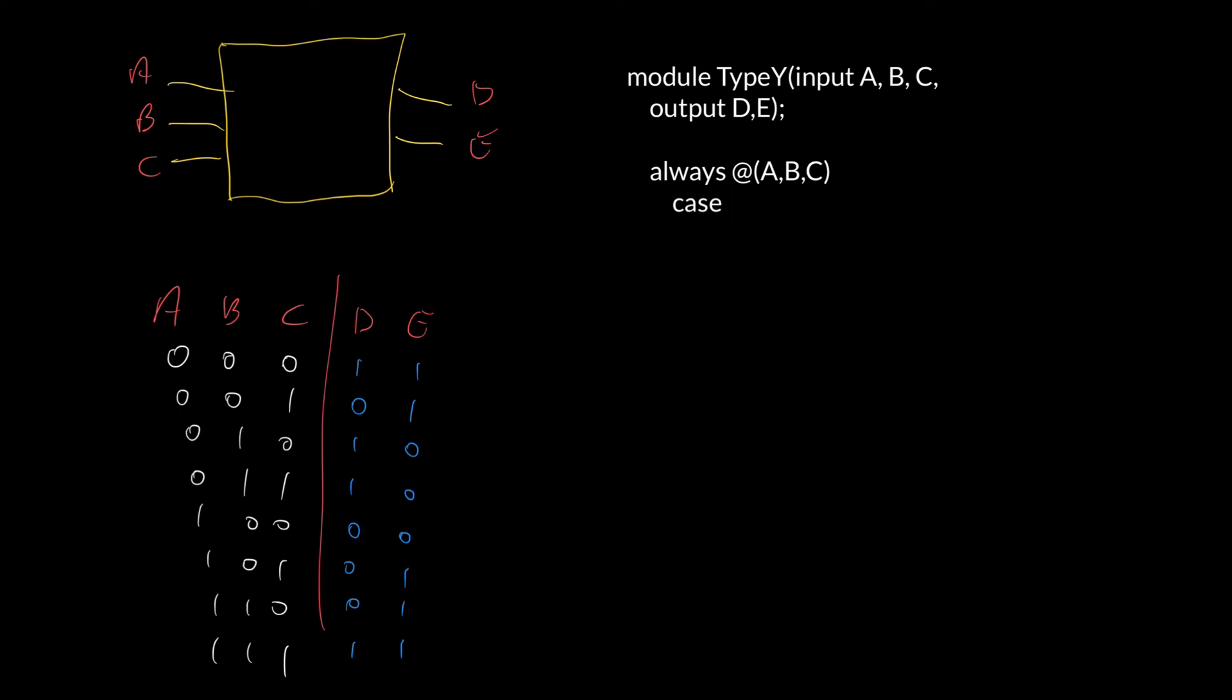With the case statement, there's one caveat here. I need to have just a single variable in here. Yet, my case is going to depend on three different variables, A, B and C. And the way to create a single number out of three separate numbers is to use the concatenation operator, which is given by these curly brackets here.